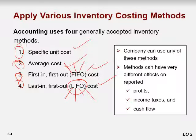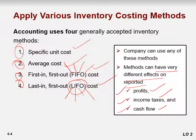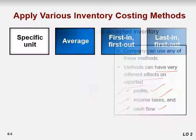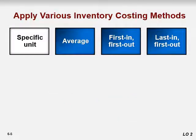A company can use any of these methods, and these methods can have very different effects on profit, income taxes, and cash flow. We'll talk in the coming slides about how the inventory cost system is going to affect profit, income taxes, and cash flow. Let's start with the first method: specific unit.